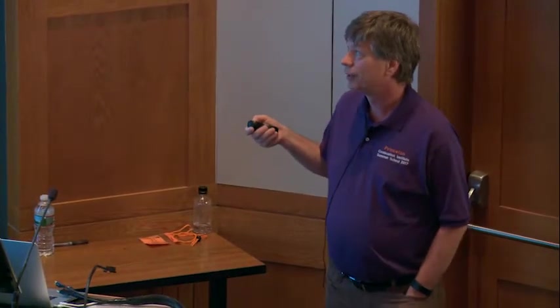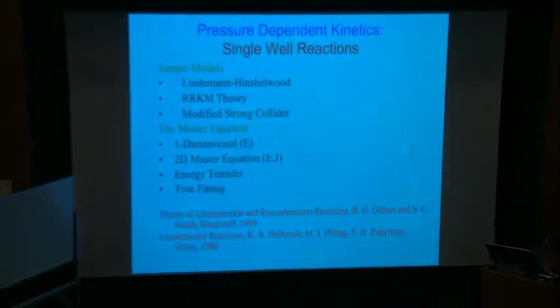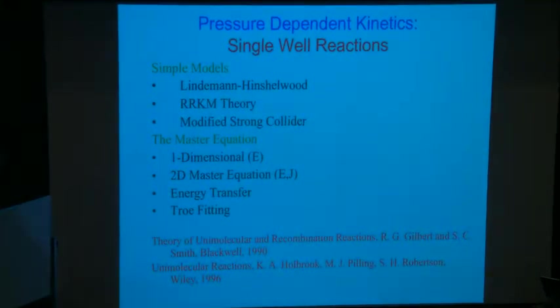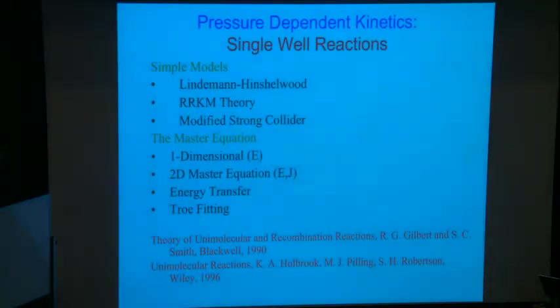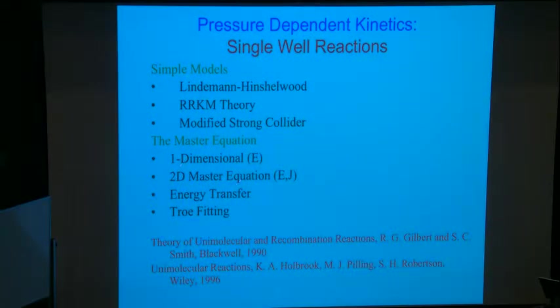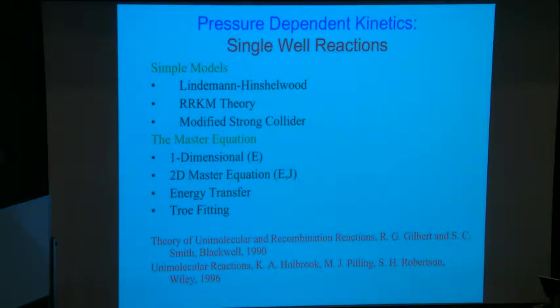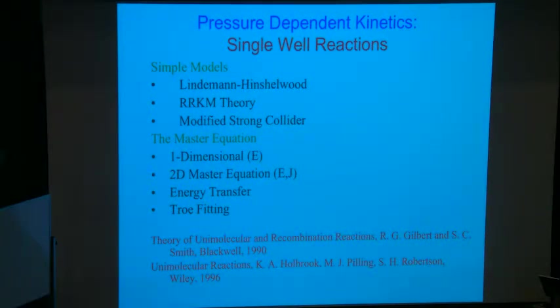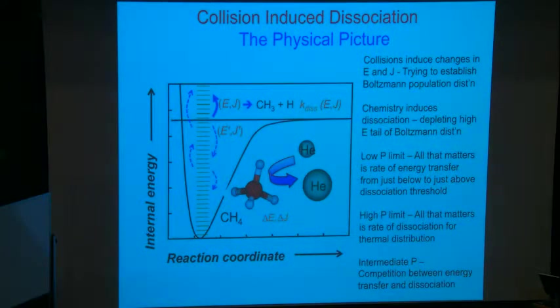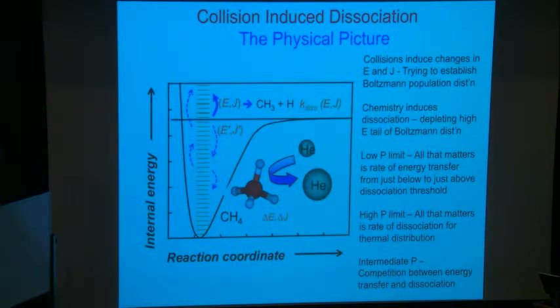I'll talk about standard treatments starting from Lindemann-Hinshelwood, then RRKM theory — named after Rice, Ramsperger, Kassel, and Marcus; Marcus was my old advisor Rudy Marcus. Then you can add a modified strong-collider to make an ad hoc fix. None of these are really right; to treat things properly you need to go to the master equation, which solves for the populations of your species on a grid of energies rather than just the total population. Then we'll discuss the 2D master equation incorporating angular momentum. This book I mentioned before also does a nice job on pressure dependence, as does a book by Pilling.